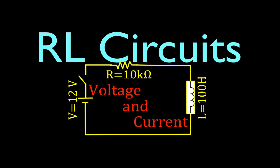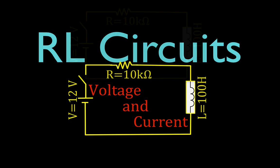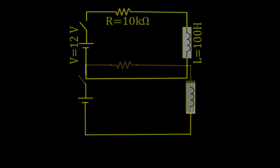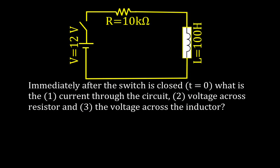In today's video we're going to go over a circuit analysis for an RL circuit. We have R as our resistor and L as our inductor, so we have an RL circuit with a DC voltage source. The circuit we're going to be using has 12 volts, 10k ohms, and a 100 Henry inductor.